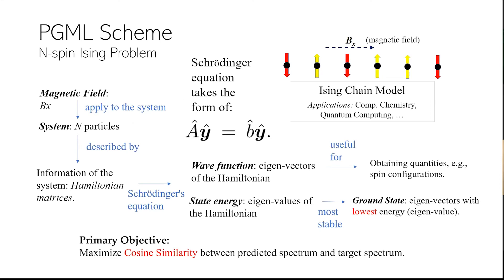Now we are interested in solving the Ising chain model which is a very normal problem in condensed matter physics. The problem can be formulated as a magnetic field applied to a system with N particles which is described by the Hamiltonian matrices. This entire system is governed by the Schrodinger equation which takes the form of an eigen equation. We're interested in predicting the wave function which is the eigenvector of the Hamiltonian, and state energy is the corresponding eigenvalues of the Hamiltonian.